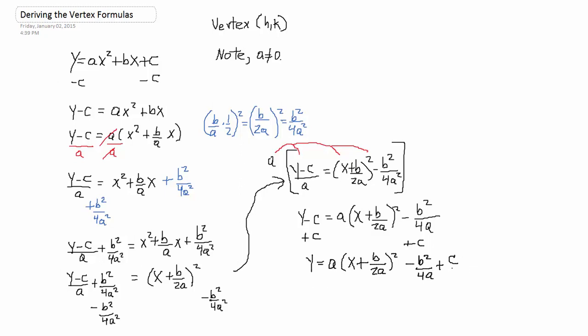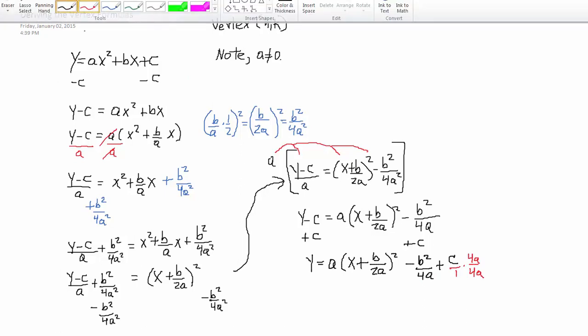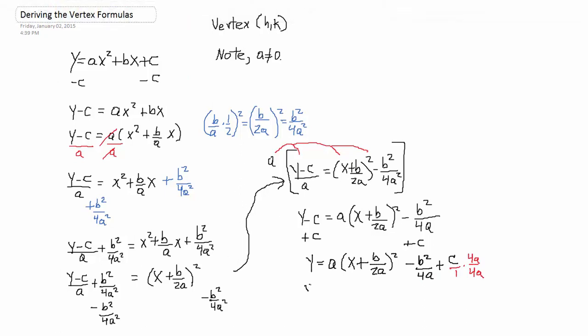Now, I'll combine all of this into a single fraction. So, in order to do that, I can treat this as C over 1. C over 1 times 4A over 4A. And I multiply top and bottom by the same thing in order to get a common denominator with the negative B squared over 4A. So, now, this looks like Y equals A, parentheses, X plus B over 2A. All of that squared. Plus C times 4A minus B squared all over 4A.